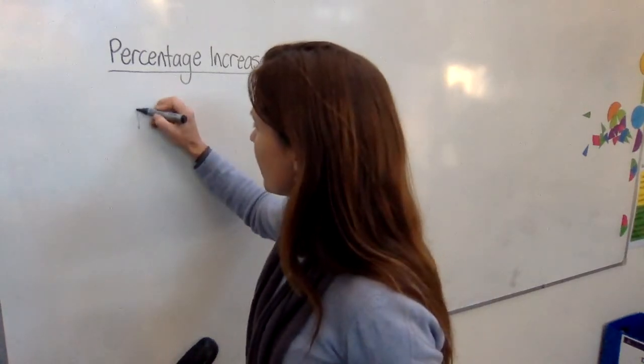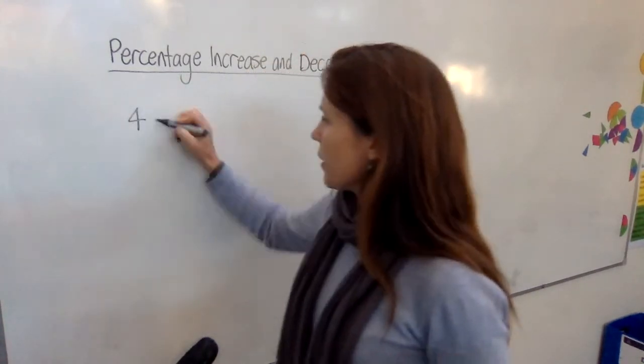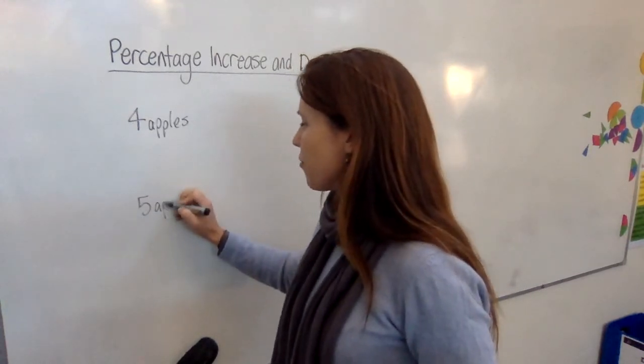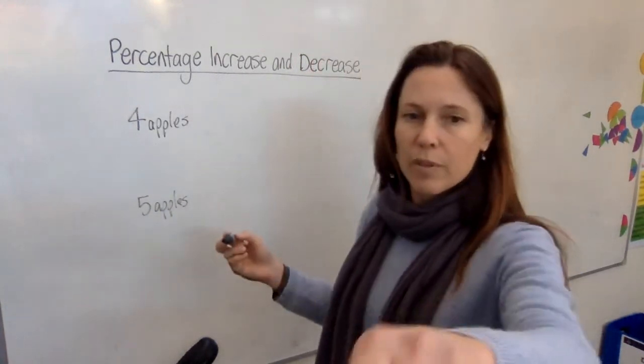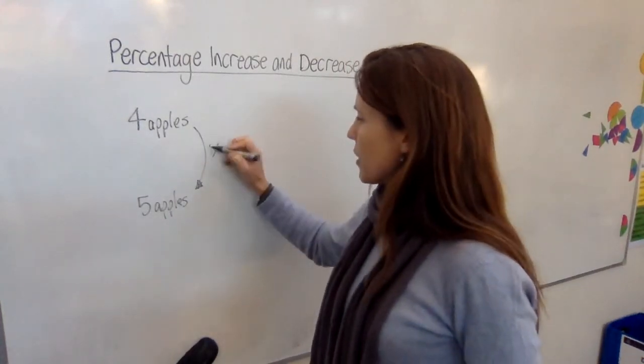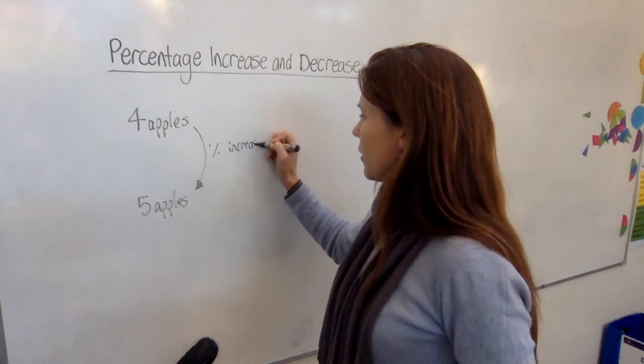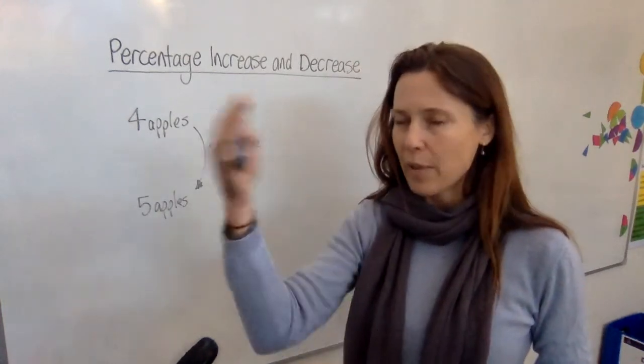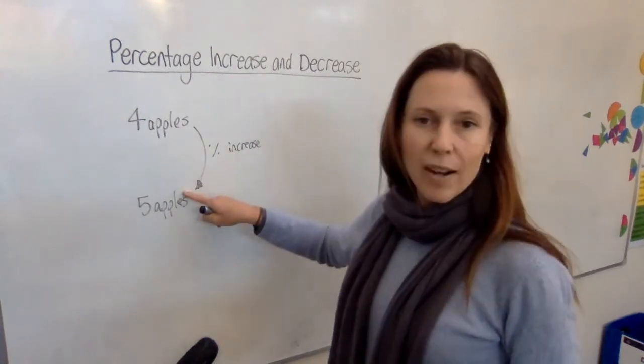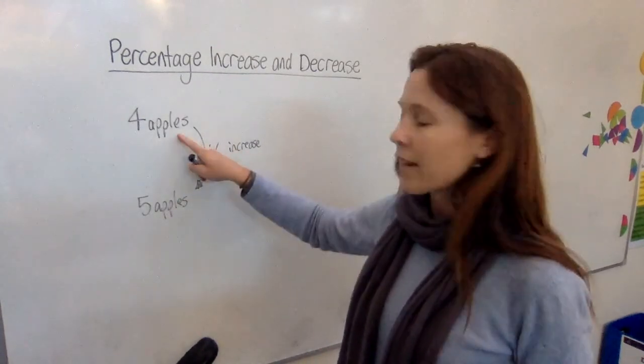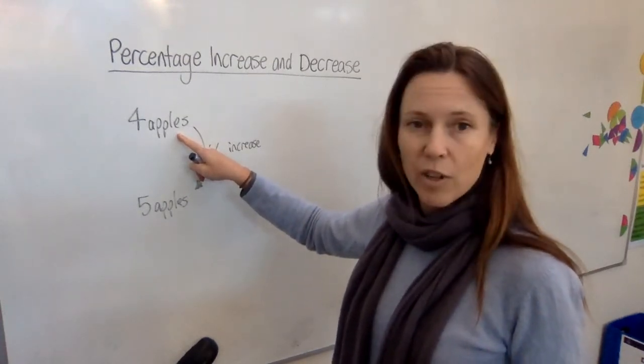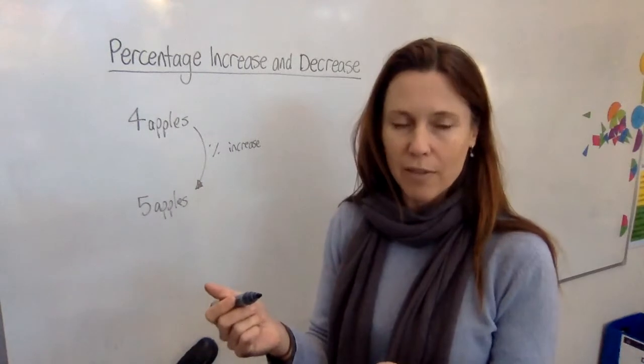Well, if I had four apples, and then I later on had five apples, and I asked you what the percentage increase was - the percentage increase. The nice thing about fractions is that fractions compare amounts to other amounts. So, I could say here, well, I've got one extra apple, what's that compared to what you had? Well, I had four, so now I've got an extra one, so I've got an extra quarter of what I used to have, haven't I?